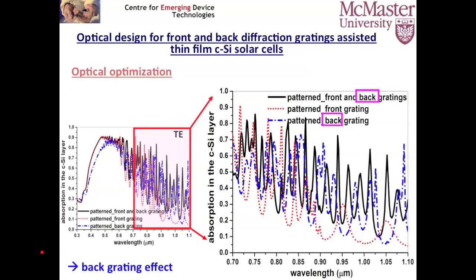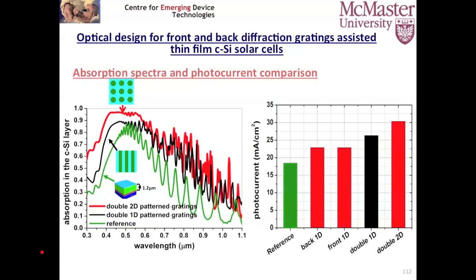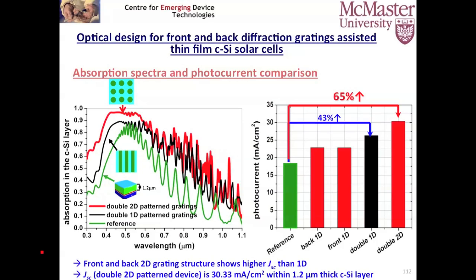Using the same optimized parameters extended to 2D, we calculated the absorption spectra and compared to the stack without any grating pattern. The double 2D grating shows even higher absorption than the double 1D structure, and both double 1D and 2D structures show higher absorption than the reference. The calculated short-circuit current density shows the double 2D grating achieves the highest value. Compared to the reference, the improvement with the double 2D grating is up to 65%, and the short-circuit current density reaches up to 30 µA/cm² in a 1.2 µm thick crystalline silicon layer.